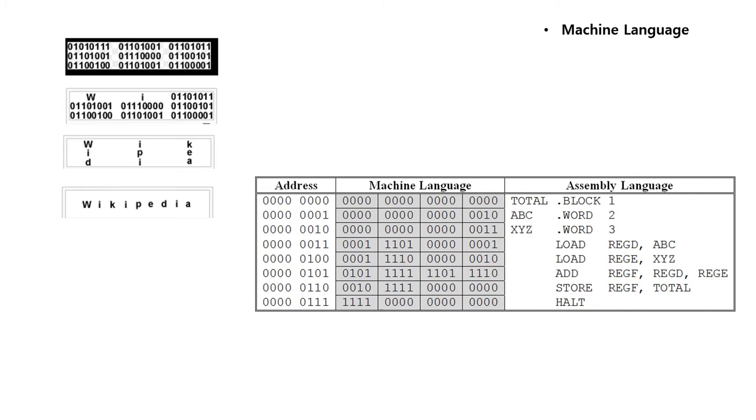Computer programs are written in one or more programming languages like C++, Java, or Visual Basic. A computer cannot directly understand the programming languages used to create computer programs, so the program code must be compiled. Once a program code is compiled, the computer can understand it because the program code is turned into machine language.